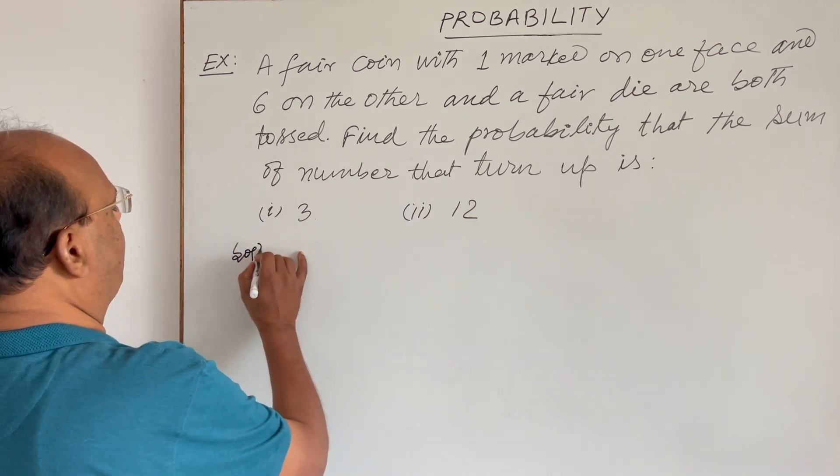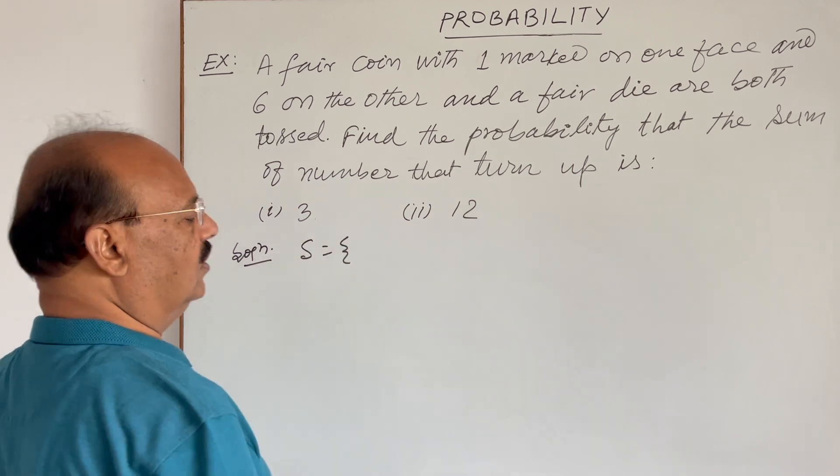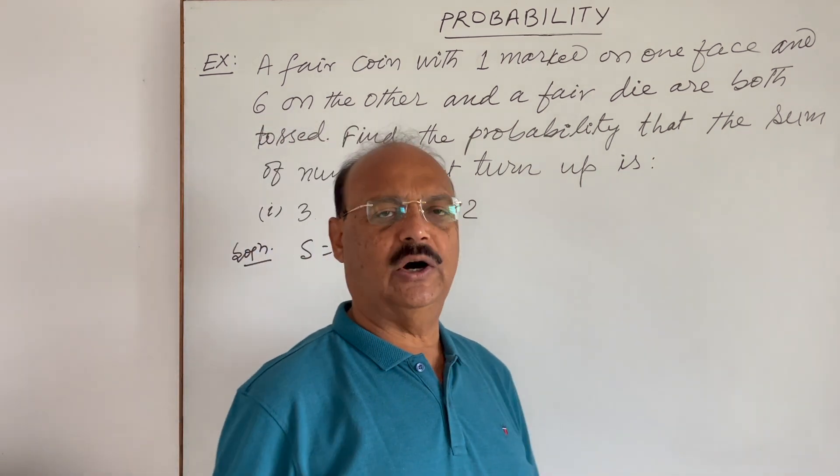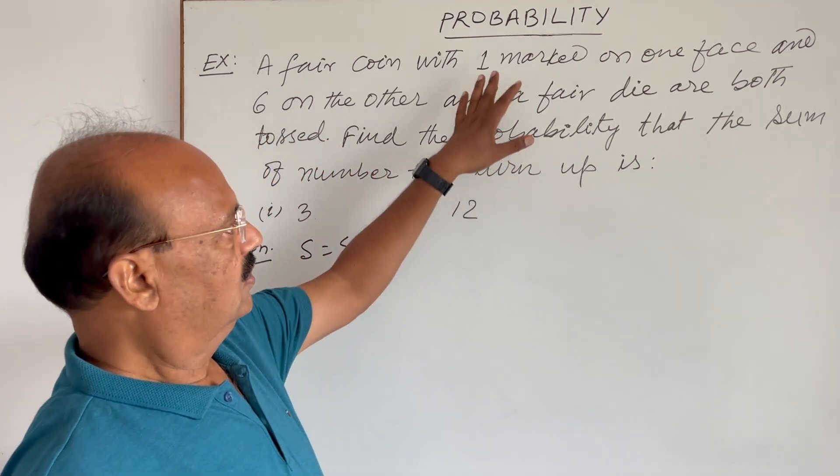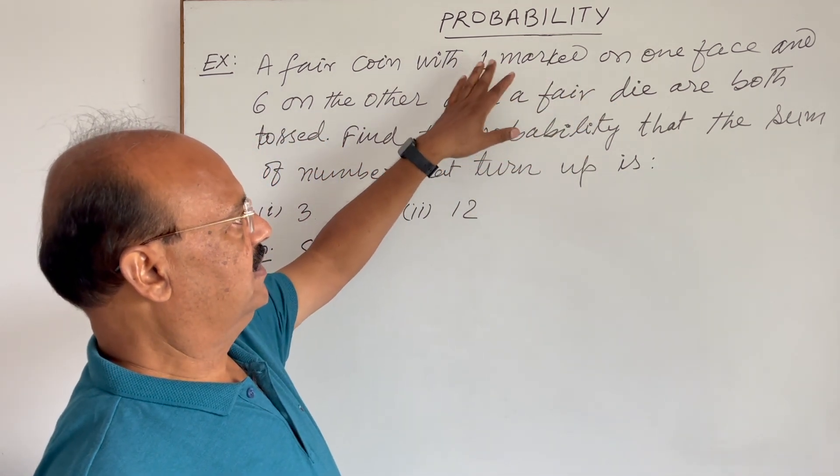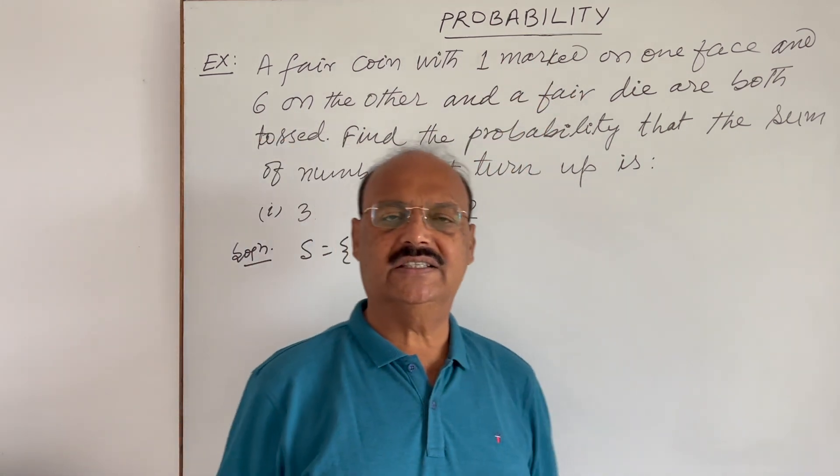So see solution here. First of all, let us find out sample space. What are the different options of outcomes in sample space? So, coin has two faces, marked one and six. And, you know, die has six faces.